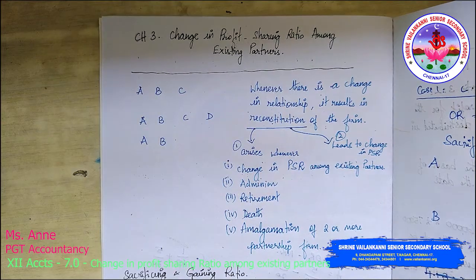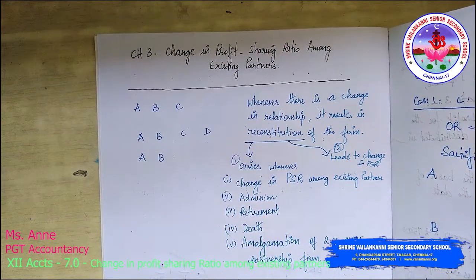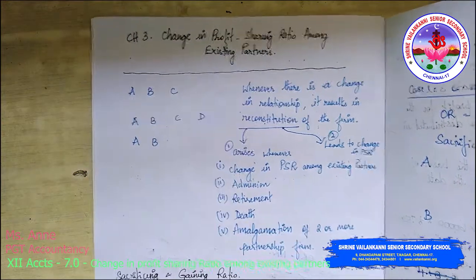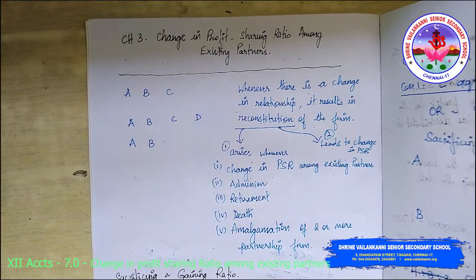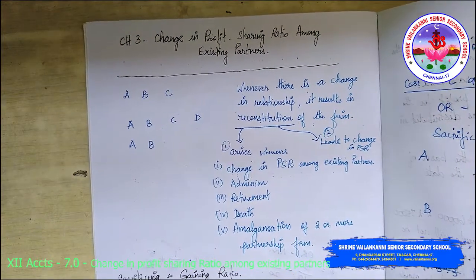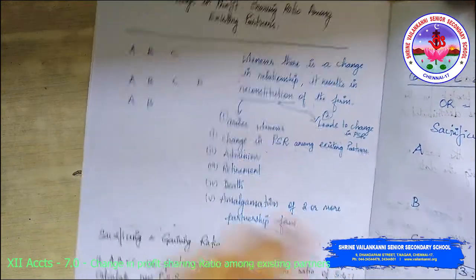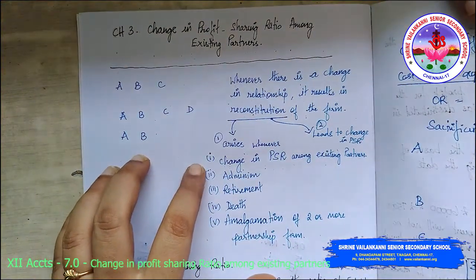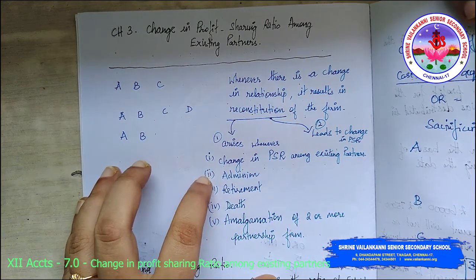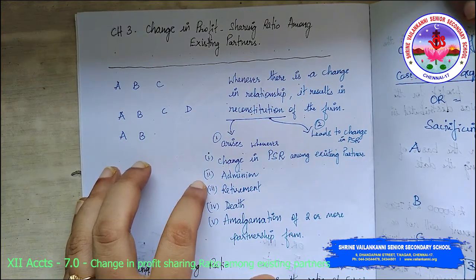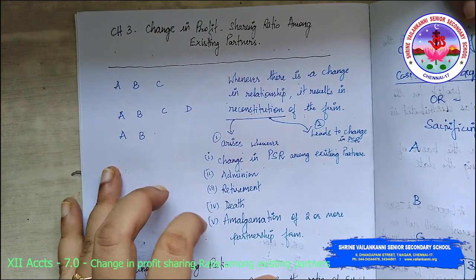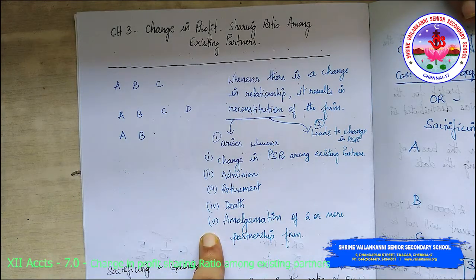Whenever there is a change in relationship, it results in reconstitution of the firm. Reconstitution of the firm arises when there is a change in profit sharing ratio among existing partners, or admission, or retirement, or death, or amalgamation of two or more partnership firms.